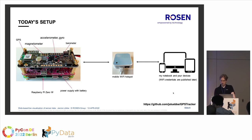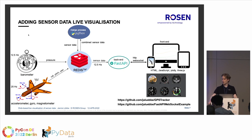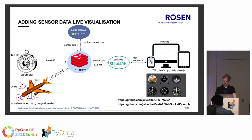The GitHub repo doesn't include the live data visualization — that was added just for this talk as a demonstration. Since we're inside this building without GPS reception, I removed the GPS processing. We still have the barometer and the orientation sensor. I modified my FastAPI web interface to use WebSockets for streaming live data.